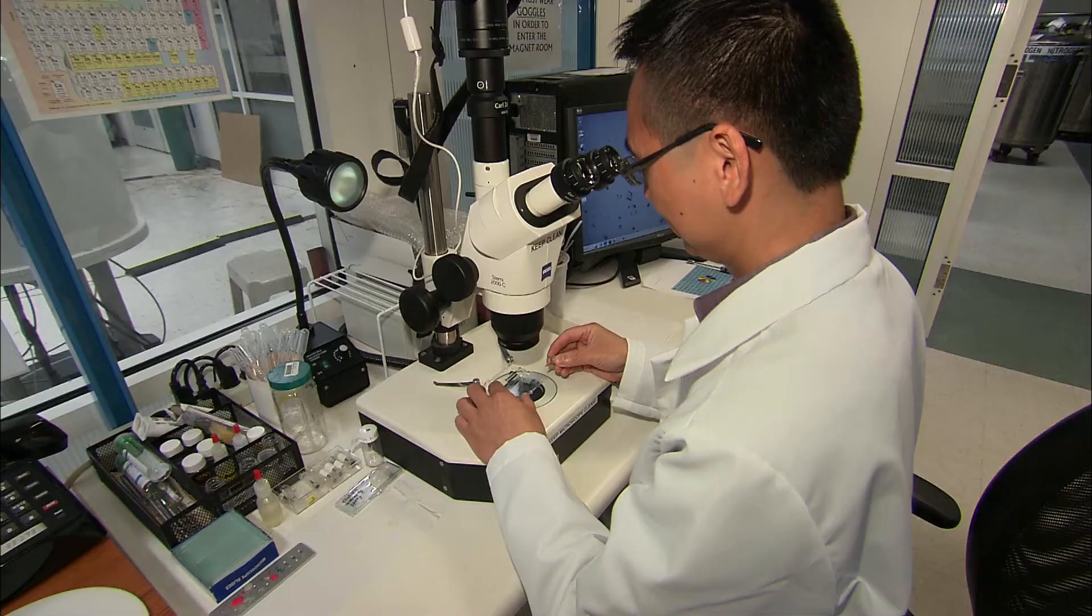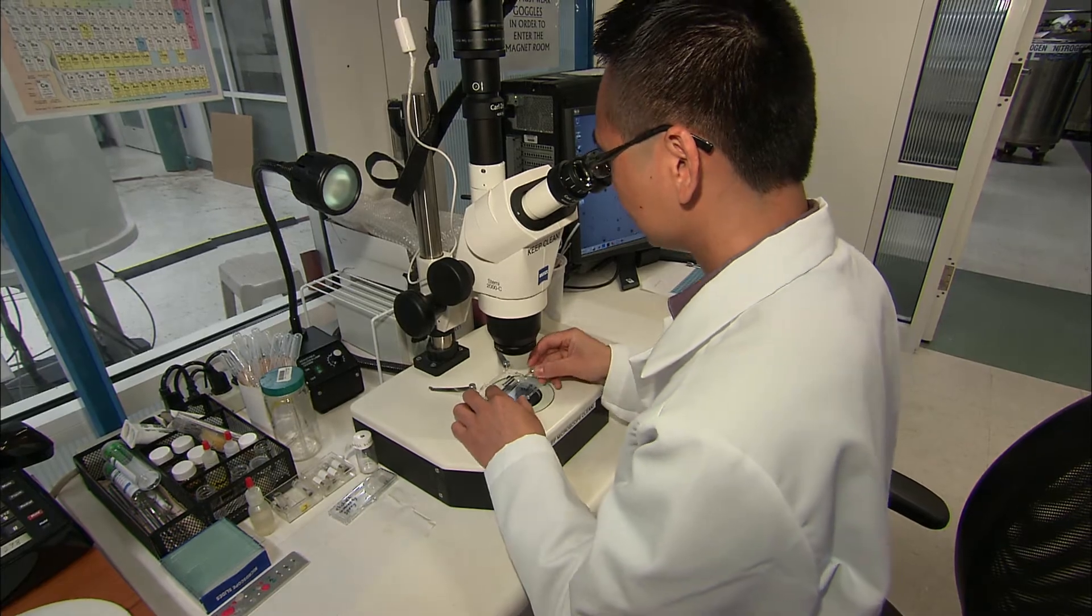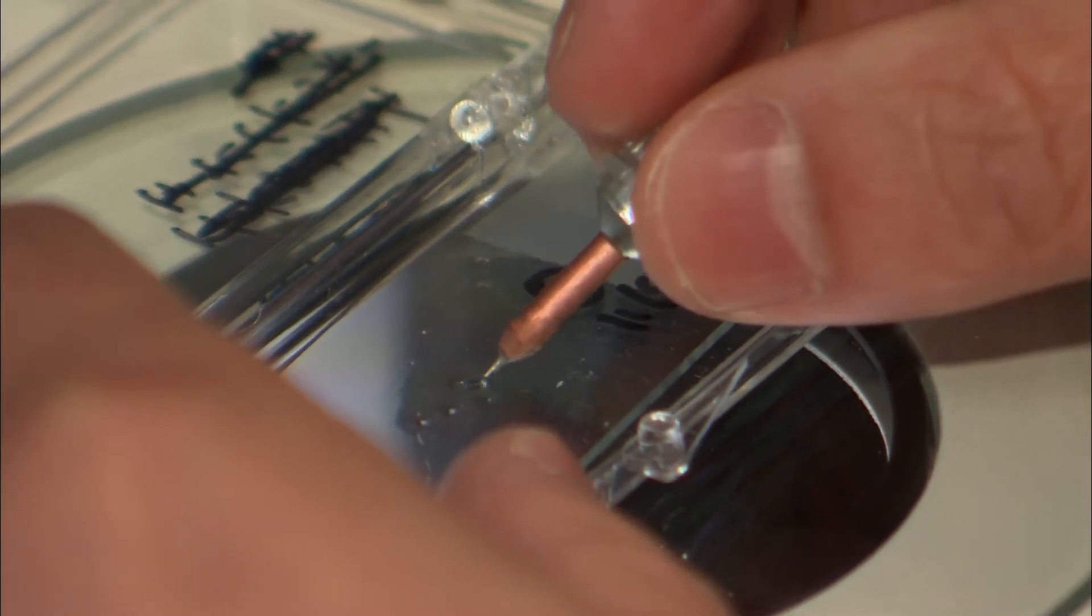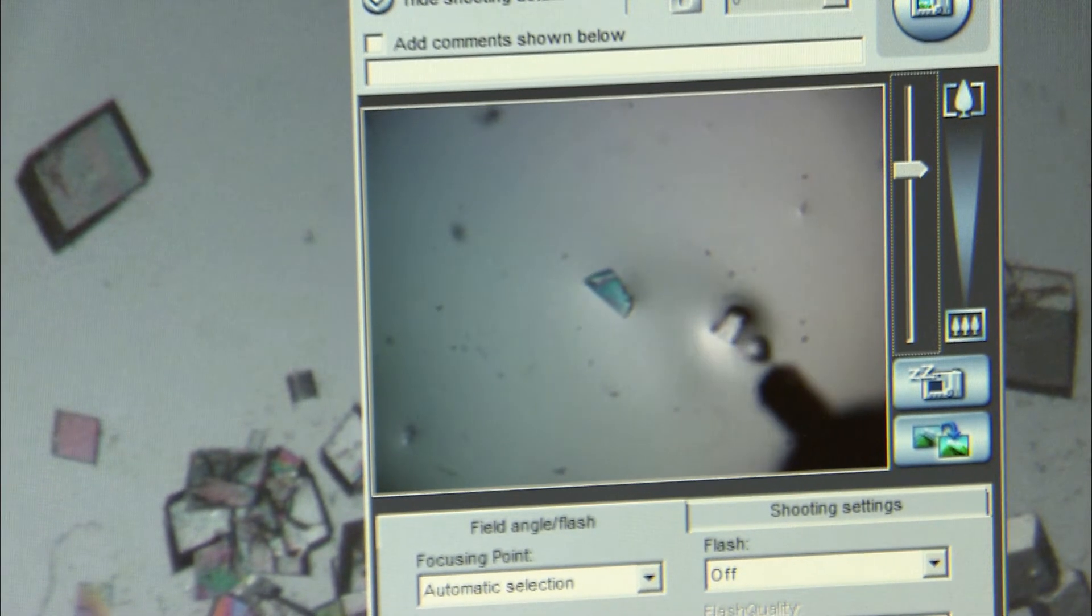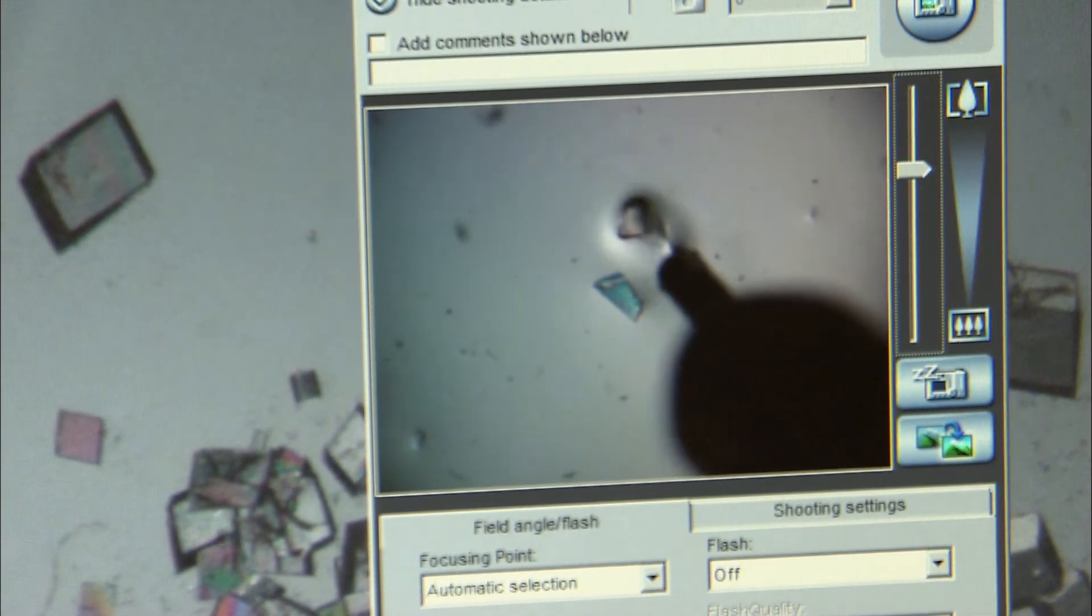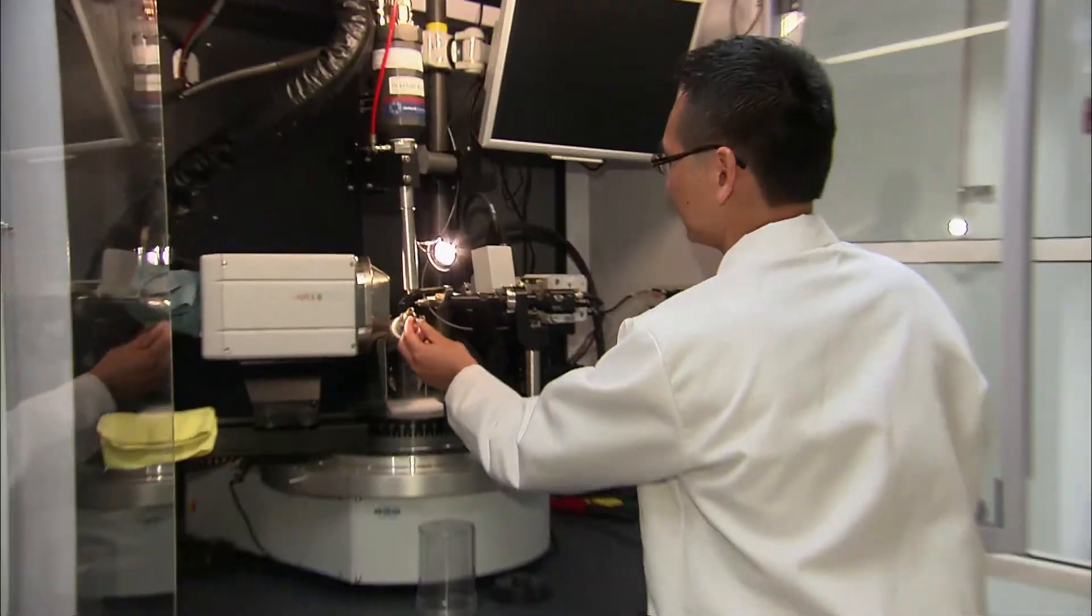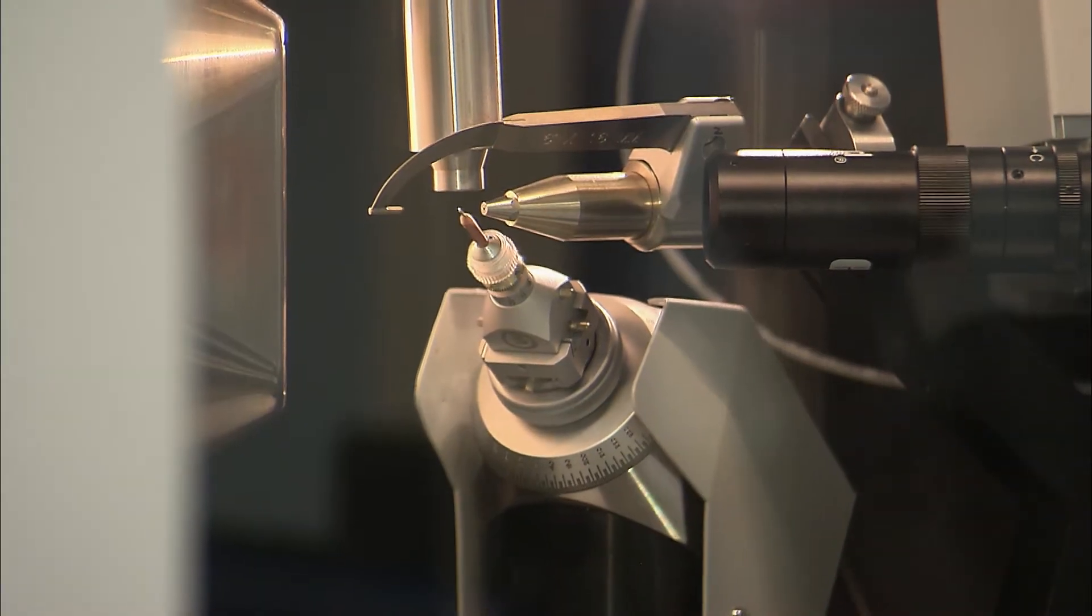To find out if the arrangement of the molecule matches the one he set out to design, Kirshenbaum and his team use a special machine called an X-ray diffractometer, which reveals the diffraction pattern of the sample. The diffraction pattern is the pattern that's formed as light waves scatter around atoms.